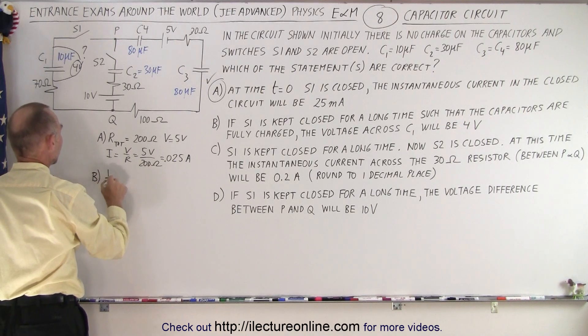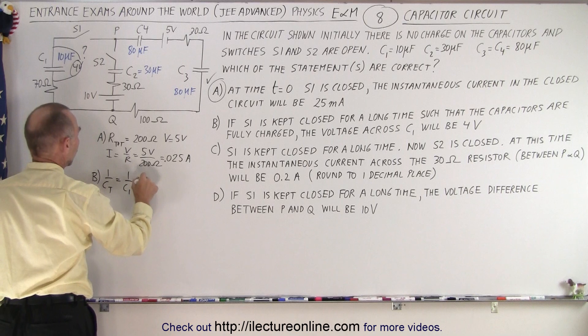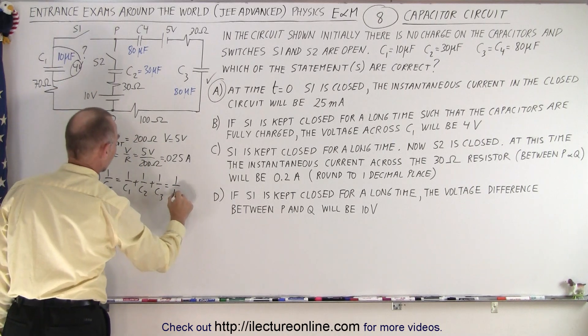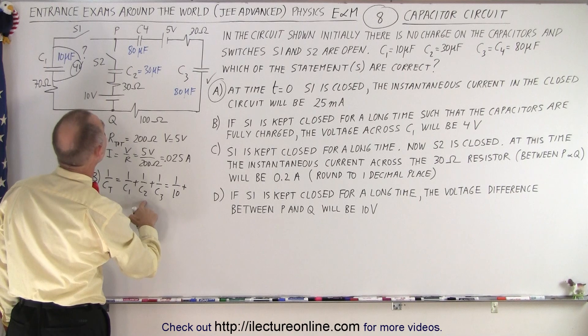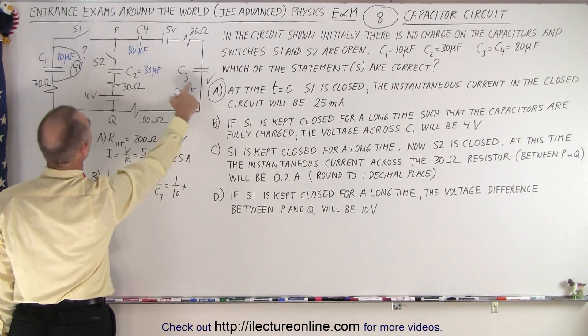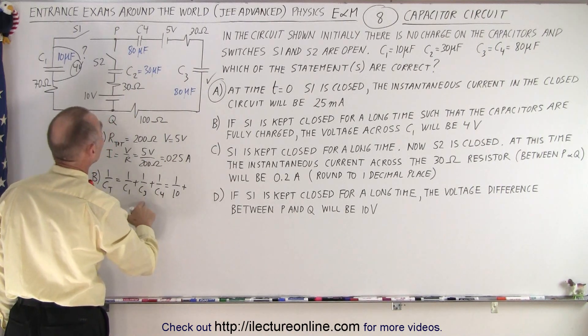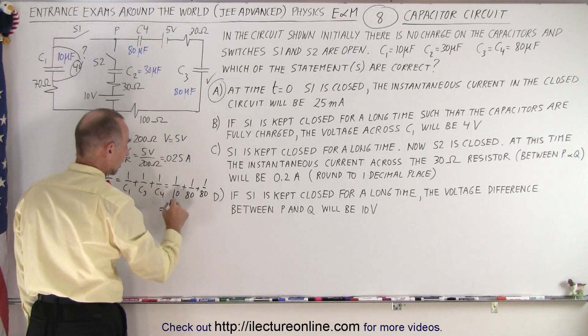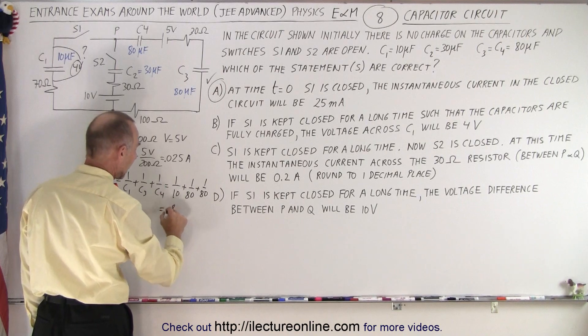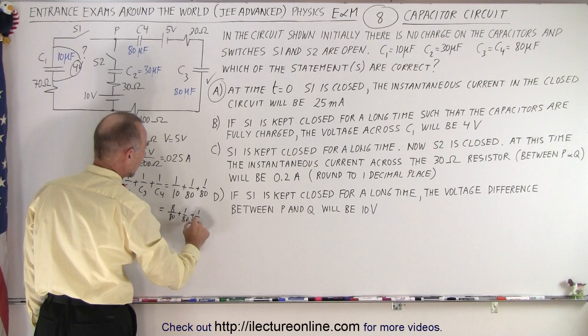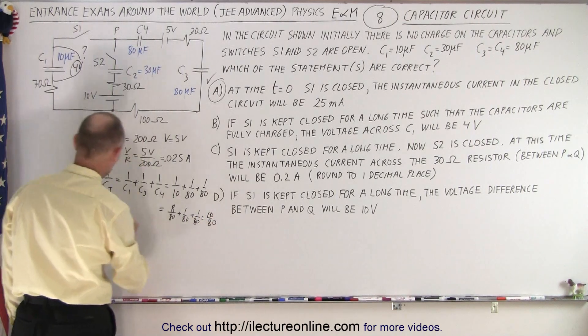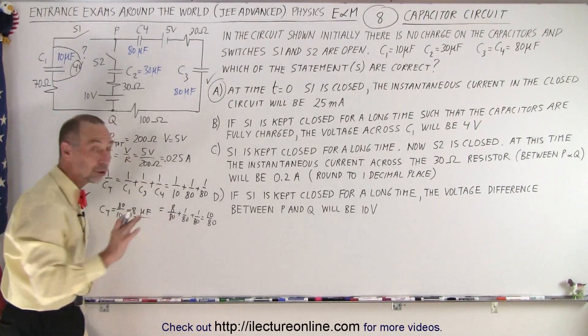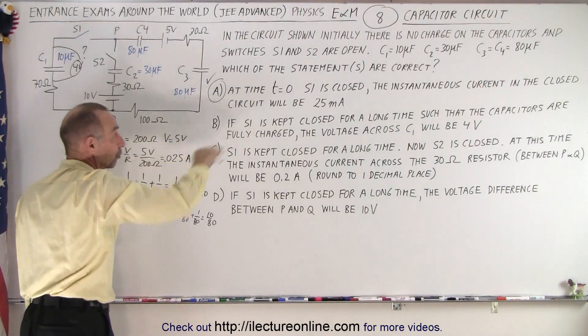So for part B, we know that 1 over C total equals 1 over C1 plus 1 over C3 plus 1 over C4, which is 1 over 10 microfarads plus 1 over 80 plus 1 over 80. When we add that together with common denominator 80, that would be 8 over 80 plus 1 over 80 plus 1 over 80, which is 10 over 80. So C total is the inverse, which is 80 over 10, which is 8 microfarads. That's the total capacitance in the circuit where S1 has been closed for a long time.